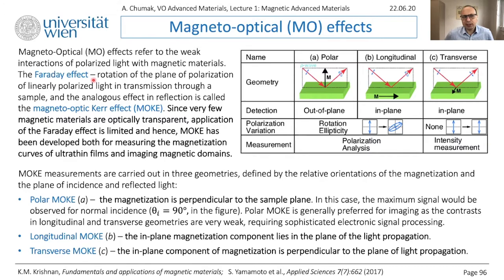If you know how thick your sample is and you analyze the polarization of the light exiting your sample, you can in principle say everything you need about the magnetization of your transparent magnetic sample. This is a very well-established technique — you can buy commercially available Faraday filters. Nevertheless, in modern science we more often work with metallic or non-transparent samples, so we cannot send light through. Instead we reflect light, and in this case we speak about the magneto-optical Kerr effect (MOKE).